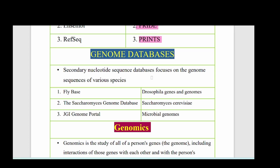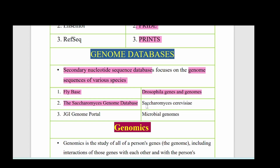Secondary nucleotide sequence databases focus on the genome sequences of various species. These are called genome databases. Examples include FlyBase — Drosophila genes and genomes; the Saccharomyces Genome Database — yeast genome information; and the JGI Genome Portal — microbial genomes.